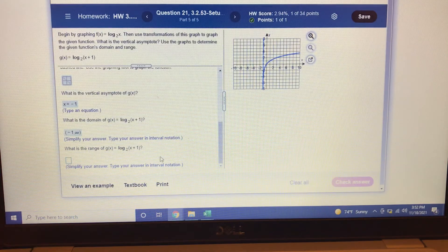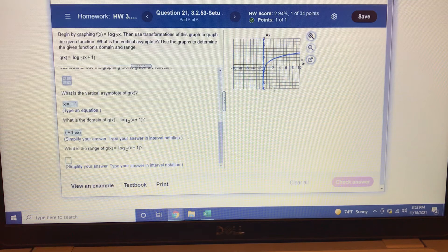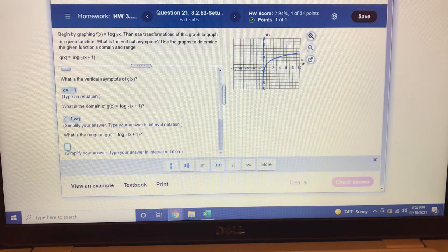And then what is the range? And you can see that this graph goes down forever to negative infinity and it's never going to stop going up. It goes up to positive infinity. So that's all real numbers.